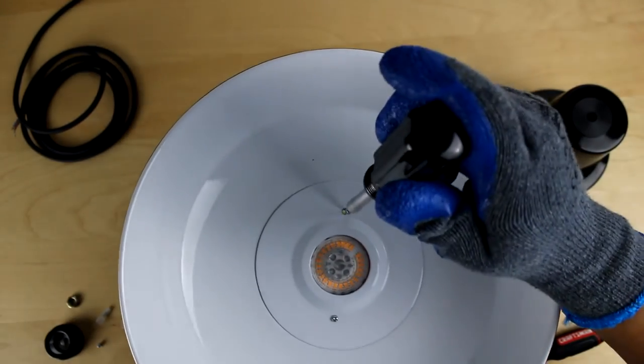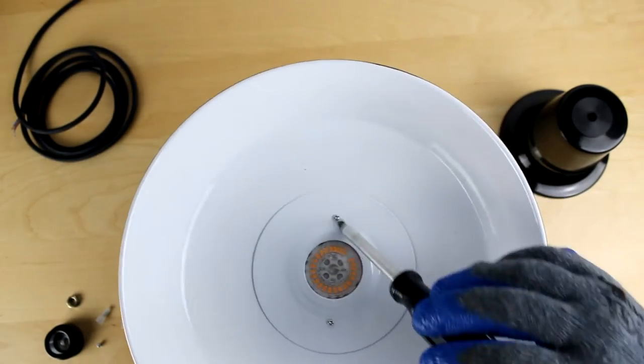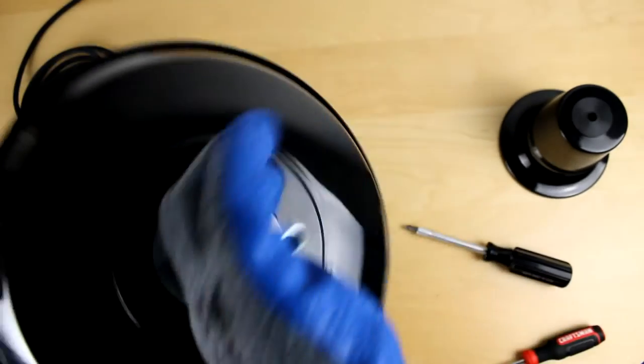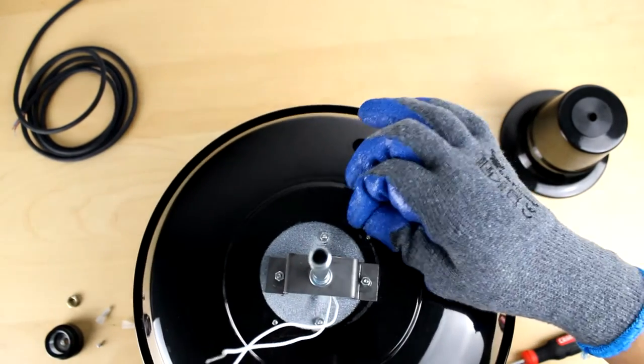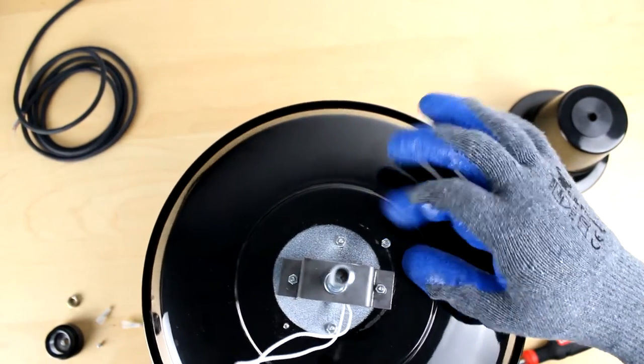Once we have aligned all the holes, we will put the two remaining screws in, flipping the shade back over, making sure the nuts do come out. We will place the two nuts and screw them on with pliers hand tight.